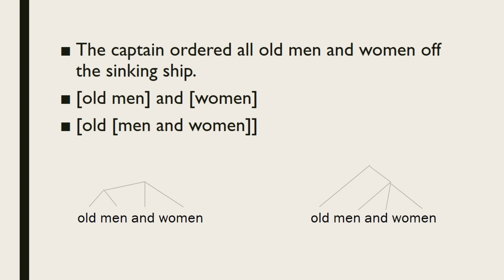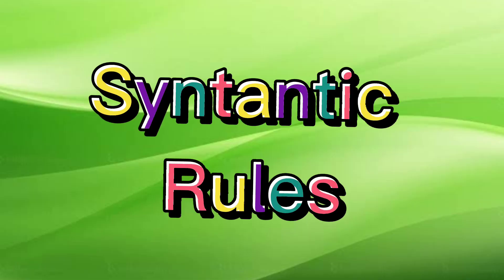The following hierarchical diagrams illustrate the same point. There are two diagrams shown on your screen. In the first structure, 'old' and 'men' are under the same node, and hence 'old' modifies 'men.' In the second structure, however, 'old' shares a node with the entire conjunction 'men and women,' and so modifies both.